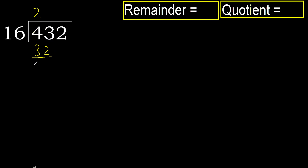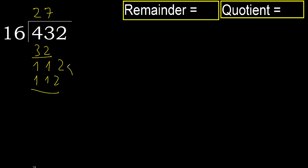Subtract, next. 16 multiply by 8 is greater. 16 multiply by 7 is 112, which is not greater. Subtract, result is 0.